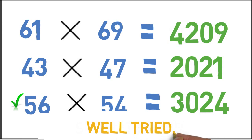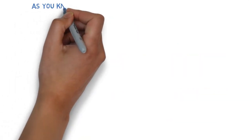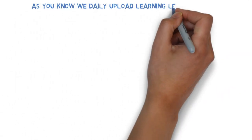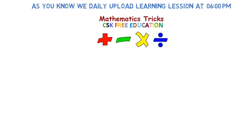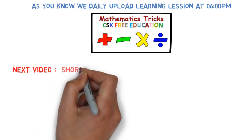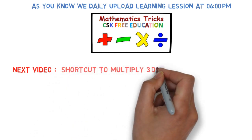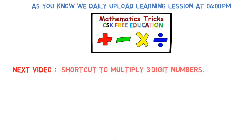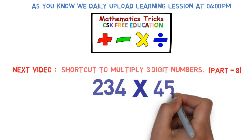Now the important thing, as you know we daily upload the session at 6 p.m. in animated way. In the next video I'm going to teach you the shortcut multiplication of three-digit number which is multiplication part 8. For example, let's say you want to multiply 234 and 456. How do you do this in just one line and you can do this mentally as well?